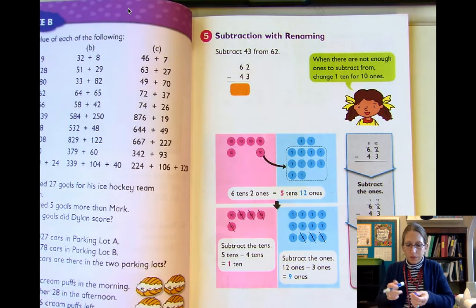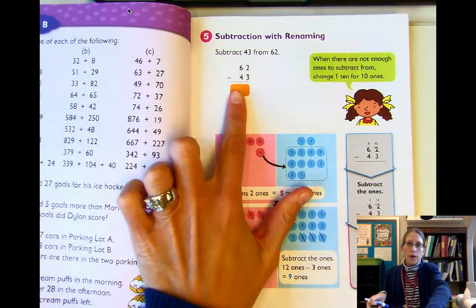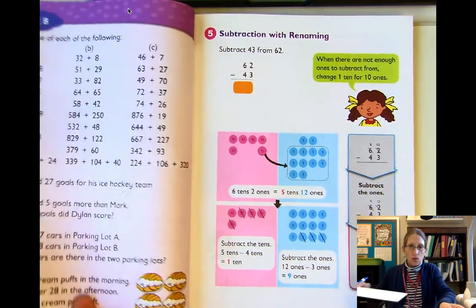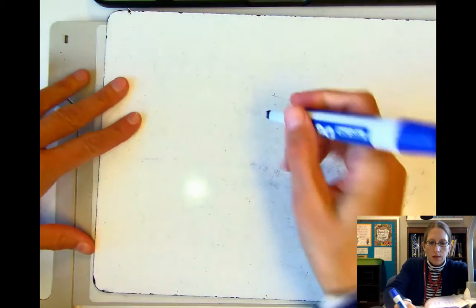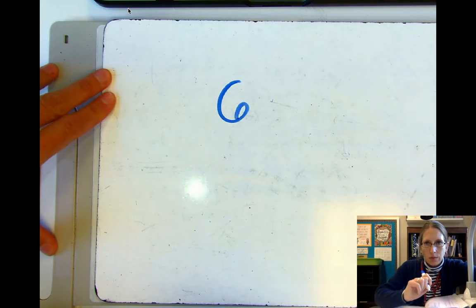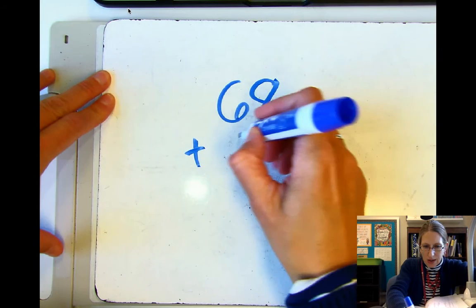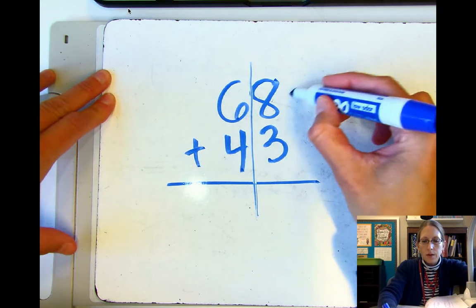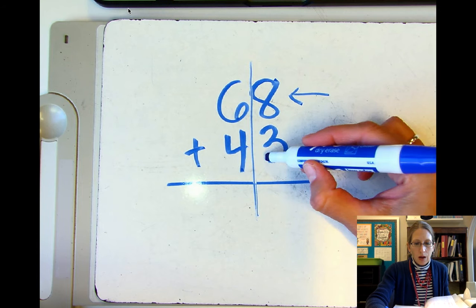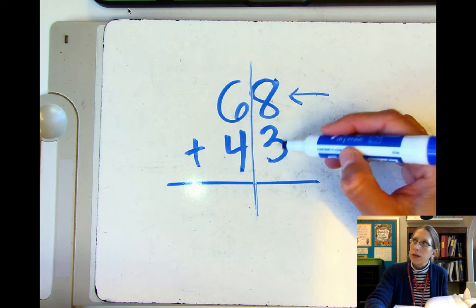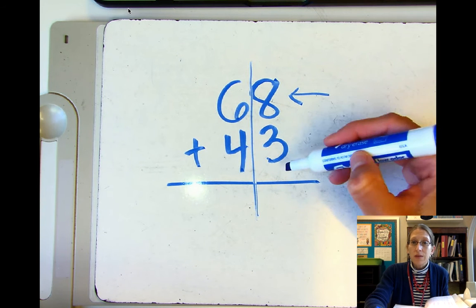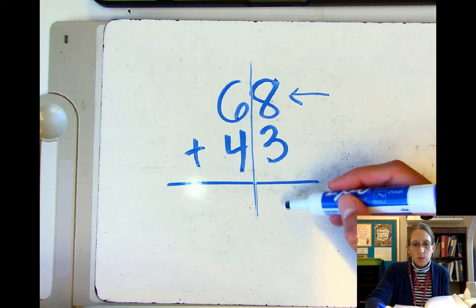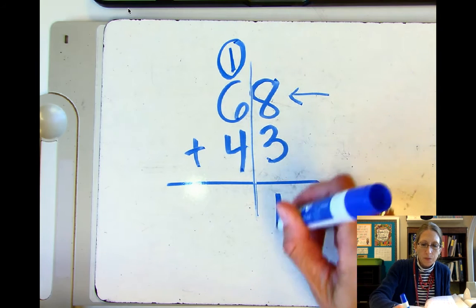Let's quickly review how we did it when adding. If we were adding 68 plus 43, eight plus three is 11. We can't have 11 in the ones place, so we had to rename it as one ten and one. We still have 11 — we're just renaming it, calling it something a little different. Then we add the tens place: six plus four is 10 plus one more is 11 tens, which is the same as 100 and one ten.